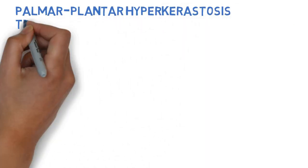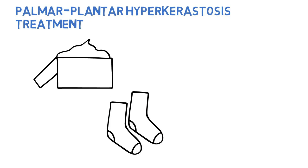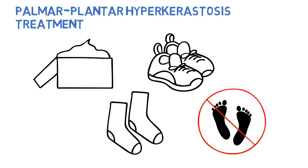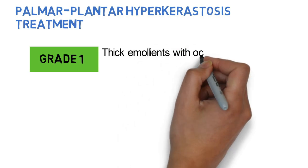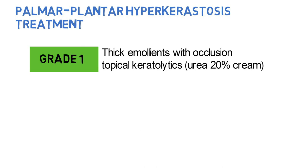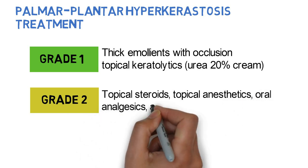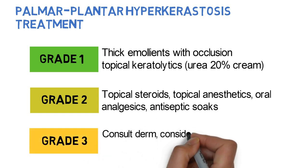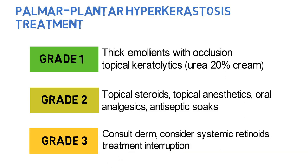To treat palmar plantar hyperkeratosis, counsel all patients about gentle skin care and reducing friction with supportive socks or shoes. Patients should not walk around barefoot or wear tight or ill-fitting shoes. For grade 1, the patient can use thick emollients at bedtime with occlusion, as well as topical keratolytics such as urea 20% cream. For grade 2, consider topical steroids class 1 or 2, topical anesthetics, oral analgesics, and antiseptic soaks. For grade 3, dermatology consultation is required for consideration of systemic retinoids. Treatment interruption may be needed.